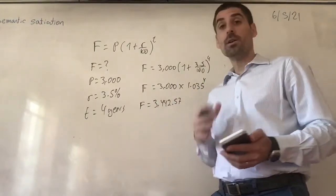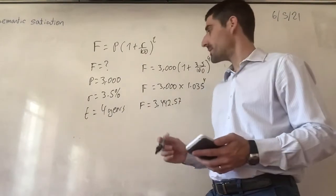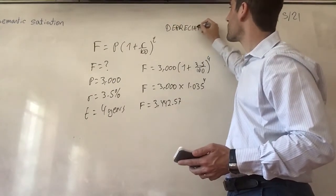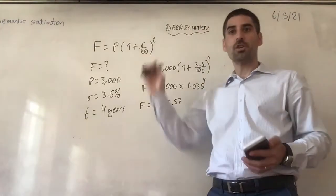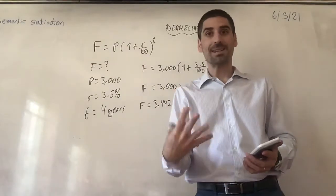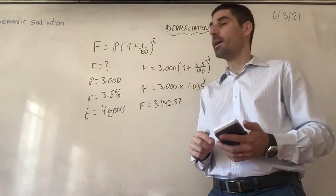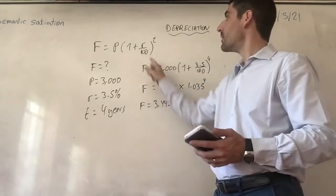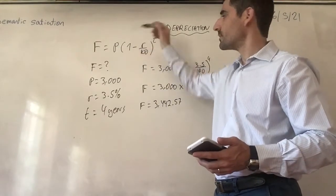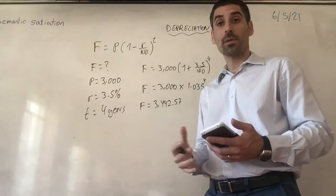Sometimes in the exam you may see questions that deal with depreciation — anything to do with depreciation, that's when something loses value over time. The question won't say so, but you need to think straight away that depreciation means compound interest. Because something is losing value, all you have to do with the formula is change the plus to a minus, to indicate that things are losing value and therefore in the future they are going to be worth less.